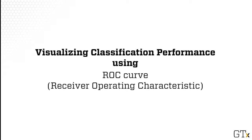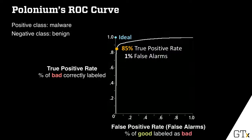Another way to visualize classification results is using the ROC curve, which stands for Receiver Operating Characteristic. Here's the ROC curve of a malware detection problem, where a positive class means malware and negative class means a benign file, such as Microsoft Word.exe. In an ROC curve, the horizontal axis is the false positive rate, or false alarm — meaning good things get misclassified as bad — and the vertical axis is the true positive rate, meaning bad files correctly classified as bad. In this example, the curve passes through an orange point showing 85% true positive rate at 1% false alarm rate.